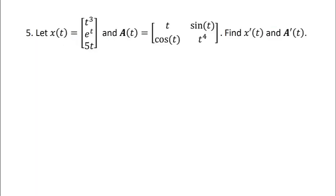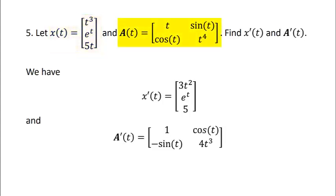So for example, suppose x of t is the matrix t cubed, e to the t, 5t and a of t is the 2 by 2 matrix t, sine of t, cosine of t, t to the fourth. We want to find the derivatives of these matrices. So again, all we're doing is taking the derivative of each component. So x prime would be 3t squared, e to the t, 5 and a prime of t would be 1, cosine of t, negative sine of t, 4t cubed, where again we just took the derivative of each entry within the matrix.